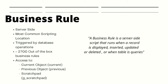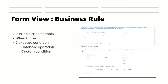As a developer we have access to three objects within a business rule: the current object, the previous object, and the scratchpad. The current object represents the current state of the entity being modified. The previous object represents the previous state of that entity. The scratchpad is a variable used to pass data from the server side to the client side, which we'll see when we go through display business rules.